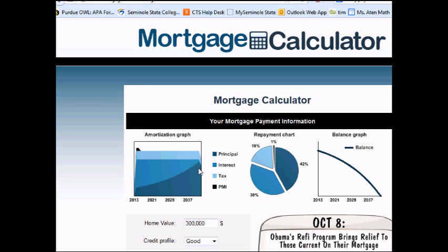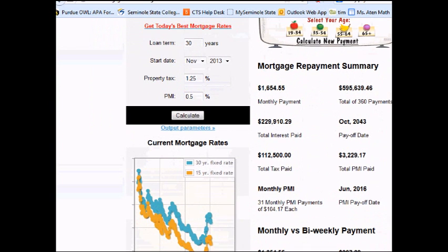And so the principal amount gets higher as the interest part gets less. If you look here, on a $300,000 home at 5% interest for 30 years, you're paying $229,910 in interest. So you're almost paying twice the cost of the house.